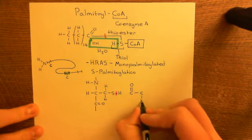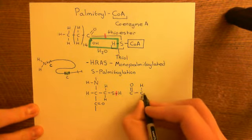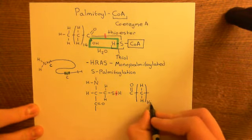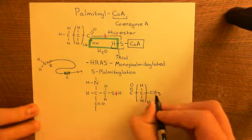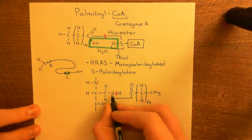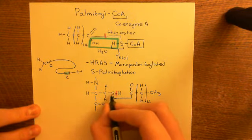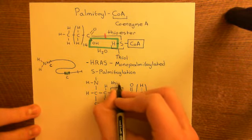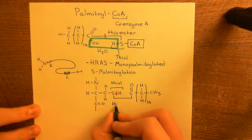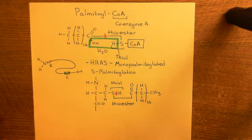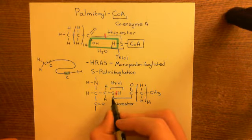The palmitoyl group — 14 methylene groups and a terminal methyl — is now attached via a thioester link to the cysteine's sulfur atom. This is a thioester link because a thiol group has been linked to a carboxylic acid group. This is why it's known as S-palmitoylation — you are adding palmitic acid molecules onto sulfur atoms.